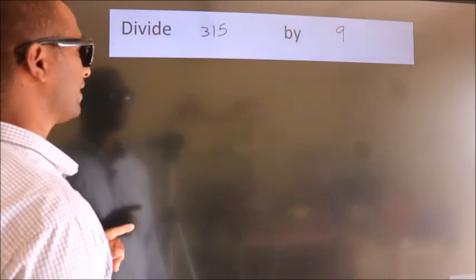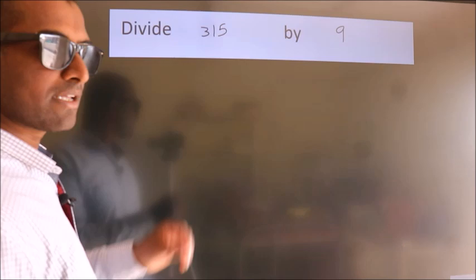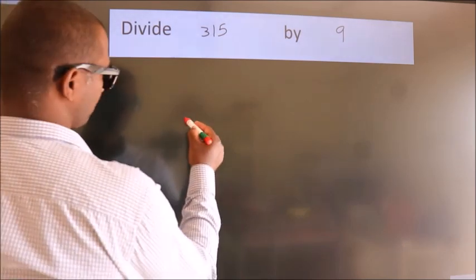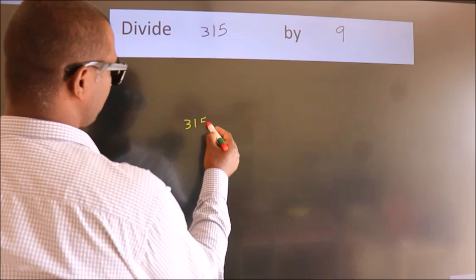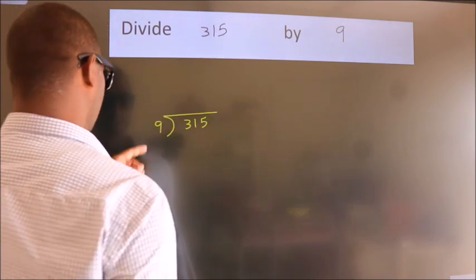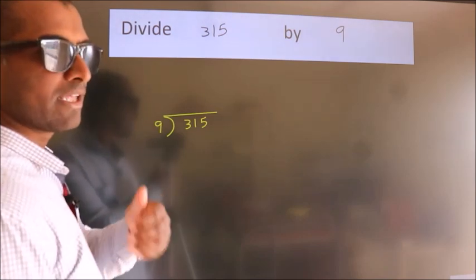Divide 315 by 9. To do this division, we should frame it in this way. 315 here, 9 here. This is your step 1. Next,